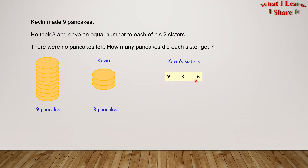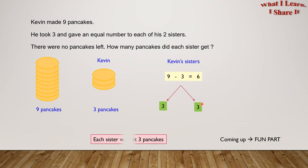But if these have to be divided equally into 2 parts, how many will each get? Each of them will get 3. So each sister will get 3 pancakes.